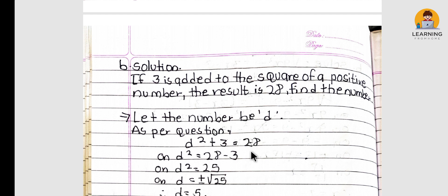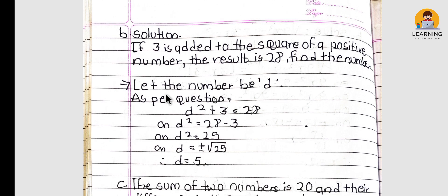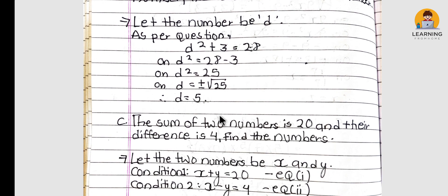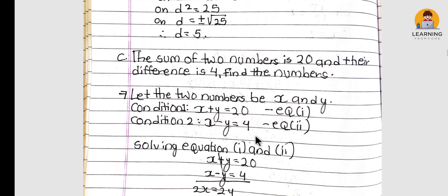If 3 is added to the square of a positive number, the result is 28. Find the number. Let the number be d. Then d² + 3 = 28, so d² = 25, and d = ±√25 = ±5.